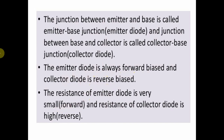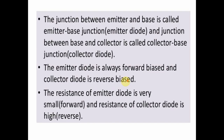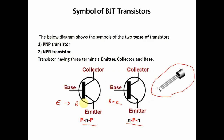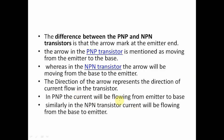What is the difference between PNP and NPN transistors? The arrow in the PNP transistor symbol moves from emitter to base, while in the NPN transistor the arrow moves from base to emitter. The direction of the arrow represents the direction of current flow in the transistor. In PNP, current flows from emitter to base. In NPN, current flows from base to emitter.